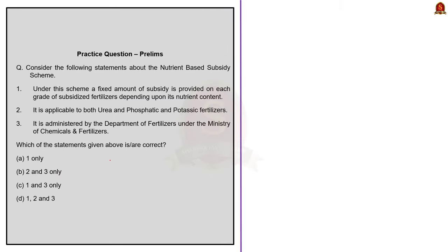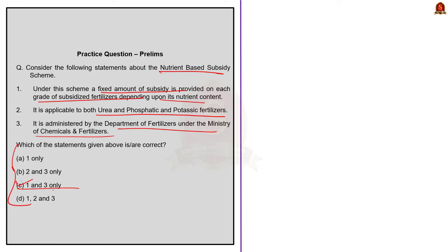Consider the following statements about the Nutrient-Based Subsidy scheme: under this scheme, a fixed amount of subsidy is provided on each grade of fertilizer depending upon its nutrient content; it is applicable to both urea and phosphatic and potassium fertilizers; it is administered by the Department of Fertilizers under the Ministry of Chemicals and Fertilizers. The correct answer is option C: 1 and 3 only. Statements one and three are correct, whereas statement two is incorrect because urea fertilizers have a centers-set fixed minimum retail price, while prices for non-urea fertilizers are decontrolled with the center fixing nutrient-based subsidy rates each year.